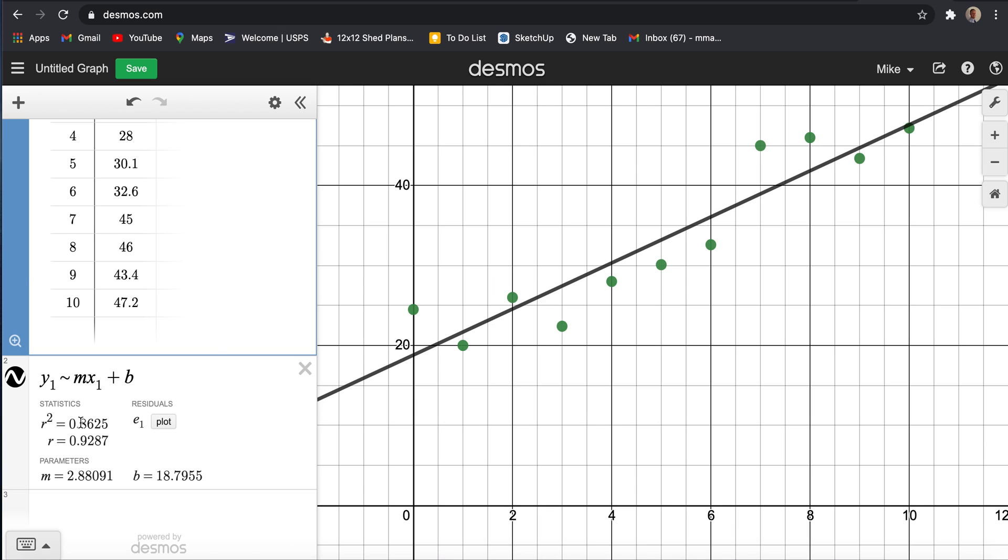Now I want to highlight some of the key variables down below. M represents the slope of my line, and it's 2.88, which means it's a positive line. The B is the Y-intercept occurring at 18.79.